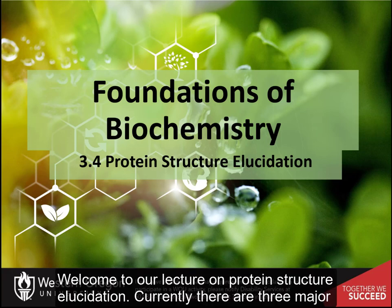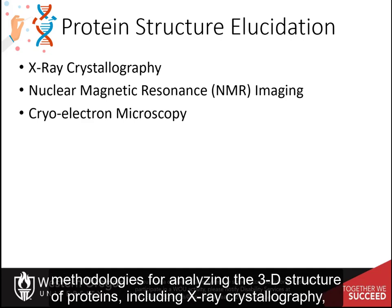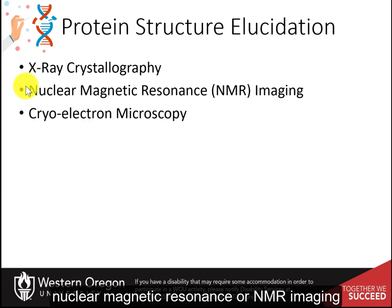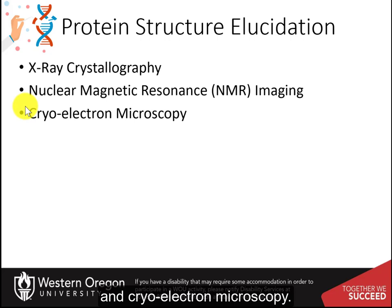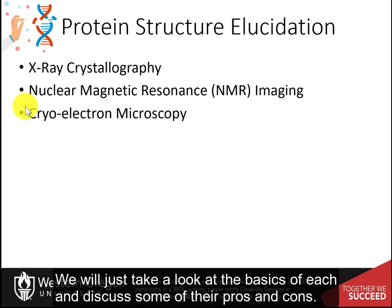Welcome to our lecture on protein structure elucidation. Currently, there are three major methodologies for analyzing the three-dimensional structure of proteins, including x-ray crystallography, nuclear magnetic resonance or NMR imaging, and cryo-electron microscopy. All of these methodologies are incredibly complex and intricate to learn. We will just take a look at the basics of each and discuss some of their pros and cons.